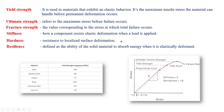Stiffness is how the component resists elastic deformation when a load is applied. Considering the yield strength region — up to the resilience limit — the component will be stiff enough to withstand the applied load up to that yield strength point. That is what we define as stiffness.